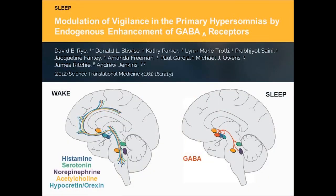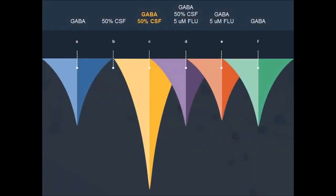This publication by Dr. David Rye and colleagues at Emory University first described GABA-related hypersomnia. This paper brought to light the possibility that a deficit in wakefulness could be due to excessive activity of the sleep-promoting system — so rather than a loss of function, this was a gain of function. The researchers also identified a substance in the cerebrospinal fluid, although still unnamed, that increases GABA's inhibitory effects.